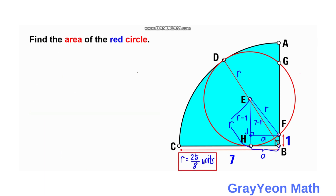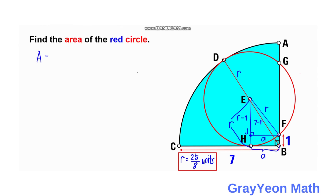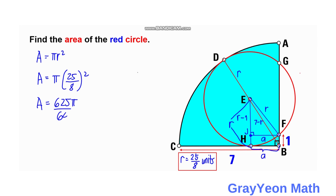For the final step, since we now have the radius, it is easy to find the area. Area equals pi R squared, so area equals pi times (25 over 8) squared. This becomes 625 over 64, giving us an area of 625 pi over 64 square units. And that is our answer.